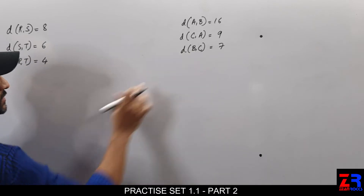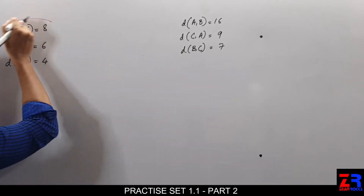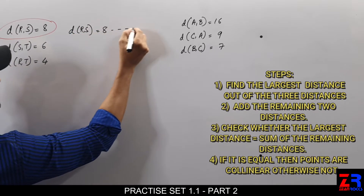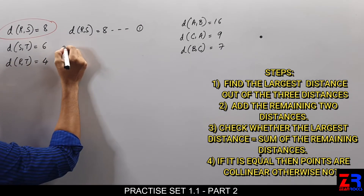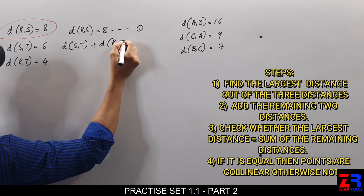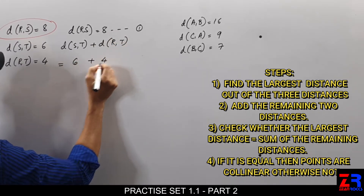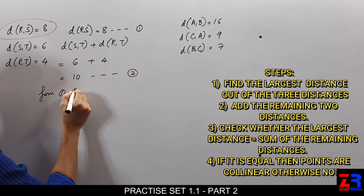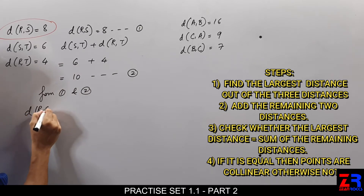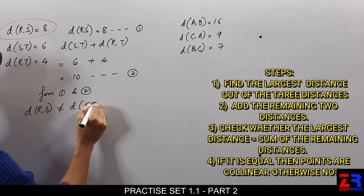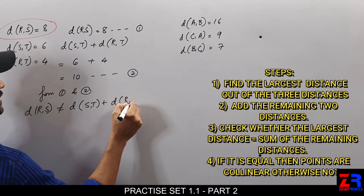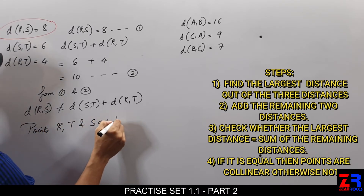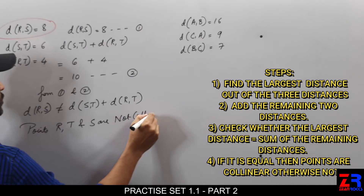This is question number 2 and question number 3. The biggest side is RS. Distance RS equals K (equation 1). Then the remaining two sides: distance ST plus distance RT equals 6 plus 4, which is equal to 10 (equation 2). From 1 and 2, distance RS is not equal to distance ST plus distance RT. That means points R, T and S are not collinear.